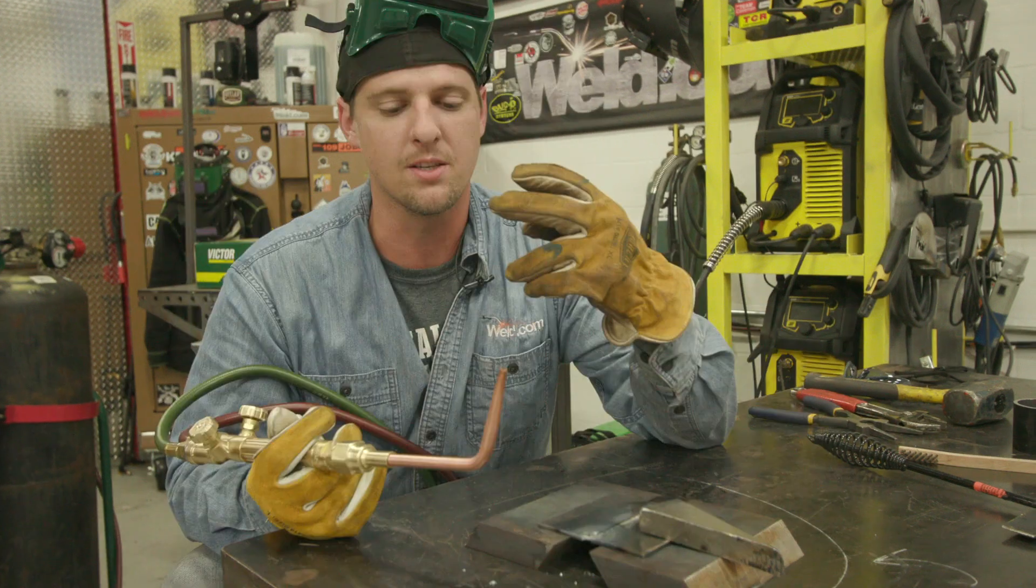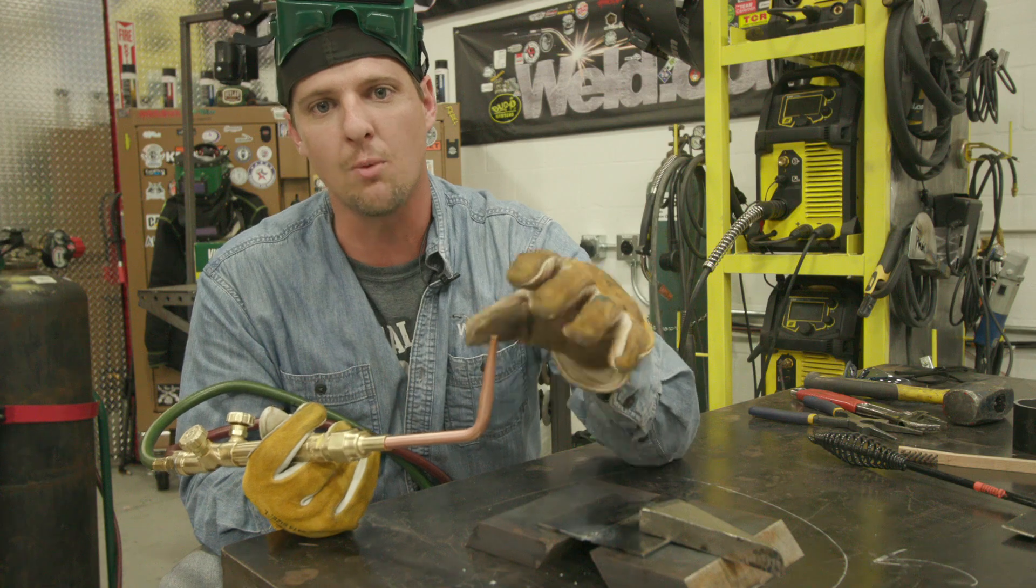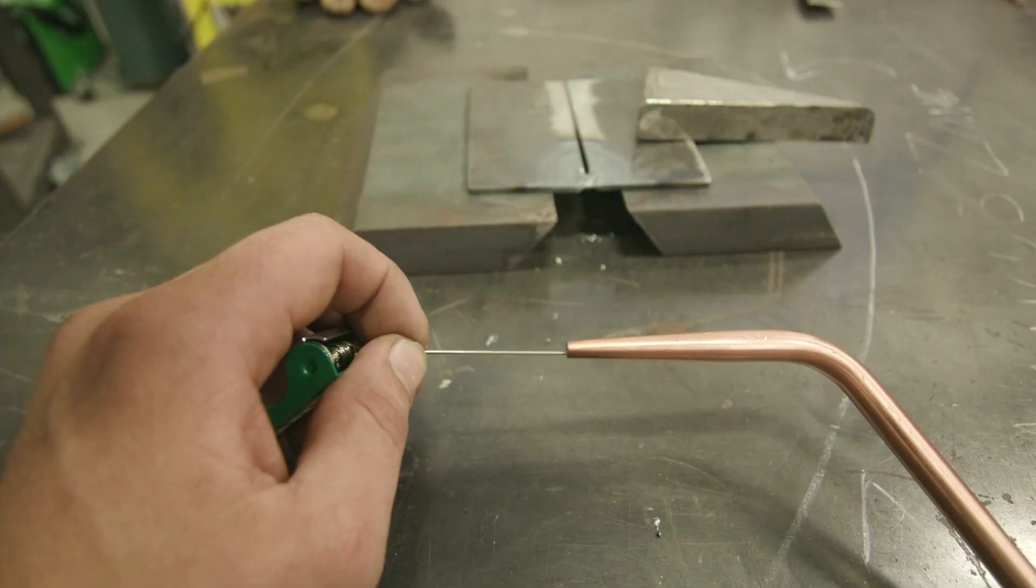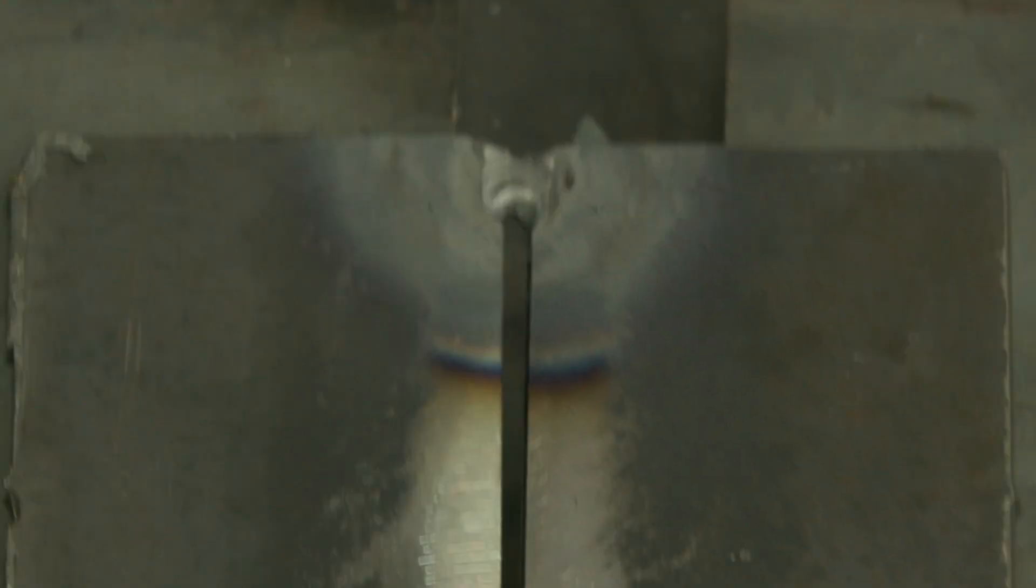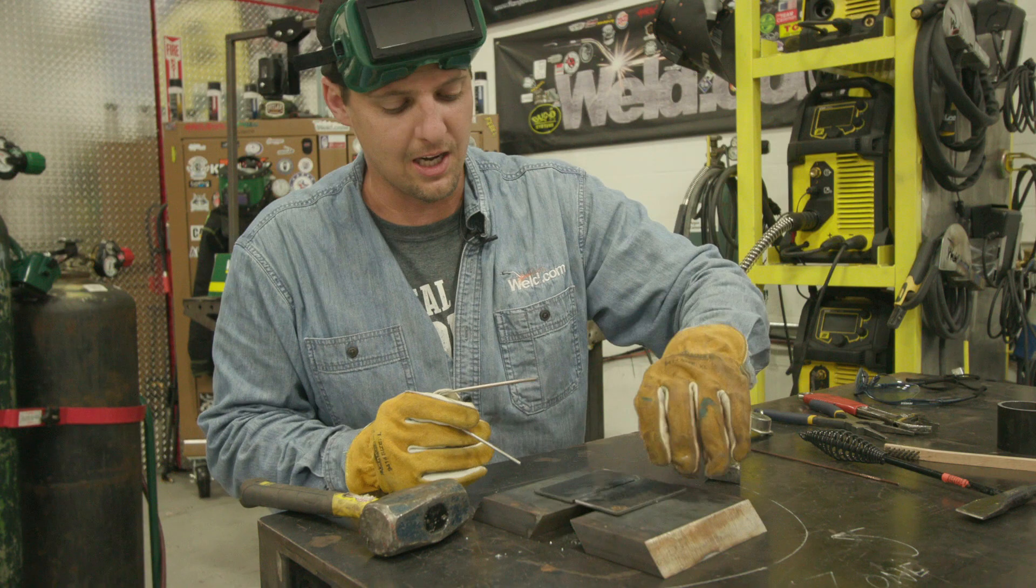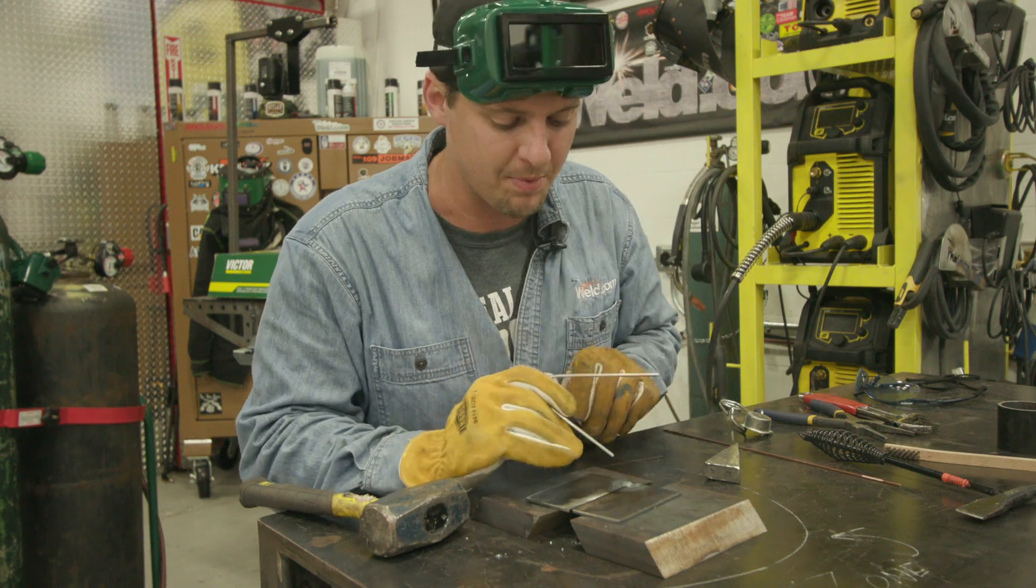It can be two things. I already checked my settings. That's one. Number two is dirty tip. So I'm going to go ahead and grab the torch tip cleaners and go ahead and clean all the debris out. I got this tacked right here.